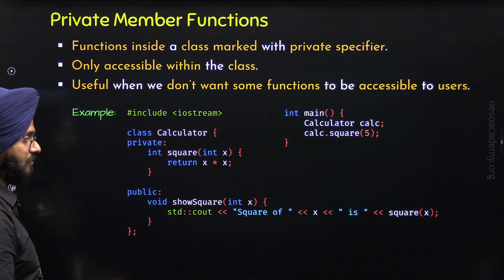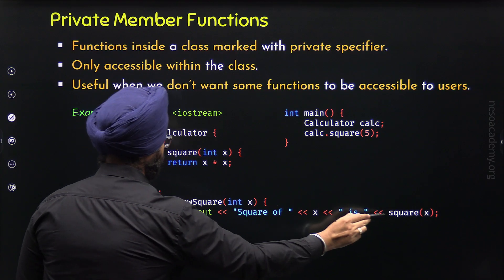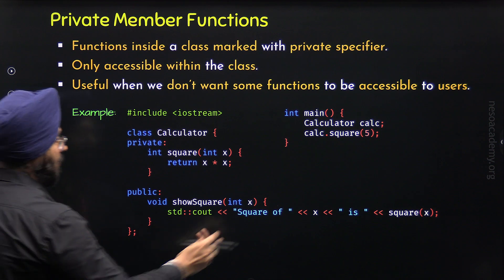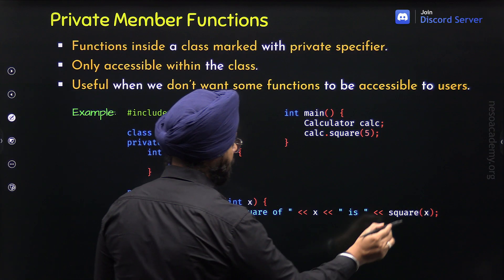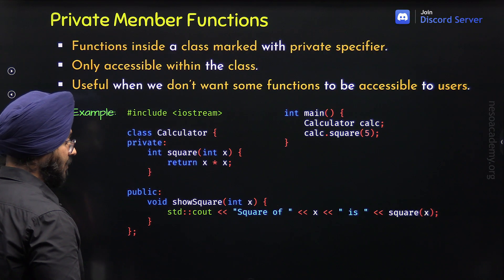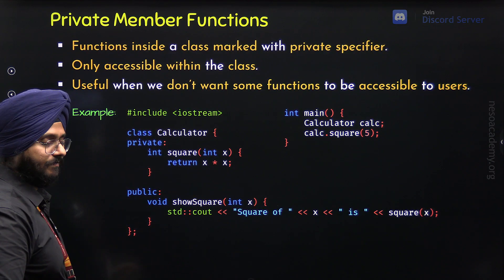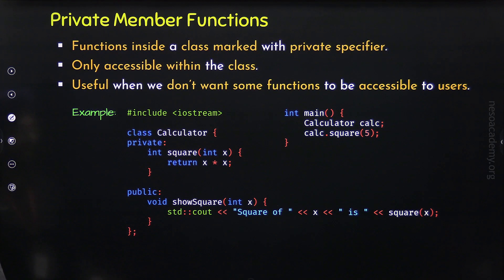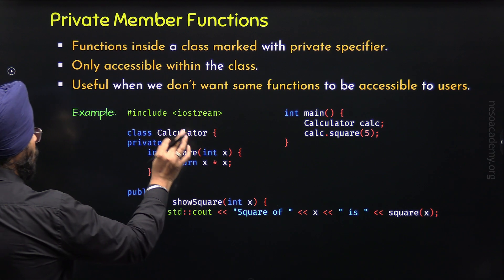Here you can observe that the square function is called from within show_square. We can call it because it is accessible within the class. The square function call receives the parameter x of the show_square function. The outside world can call show_square, but it cannot call the square function directly.